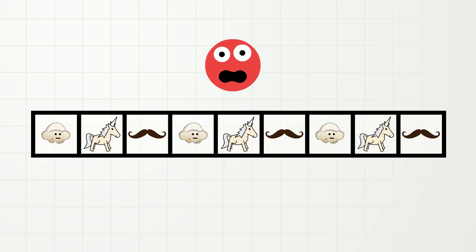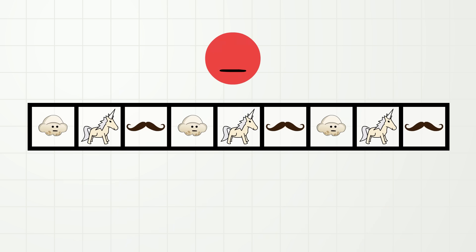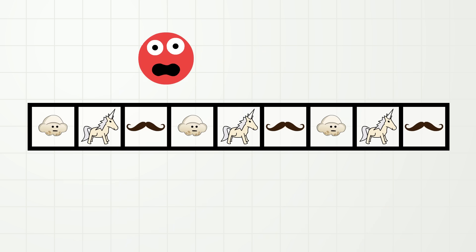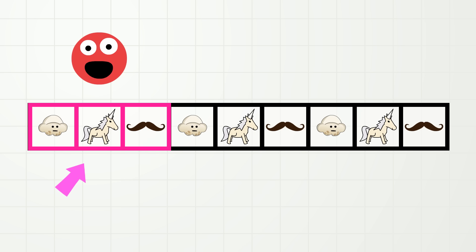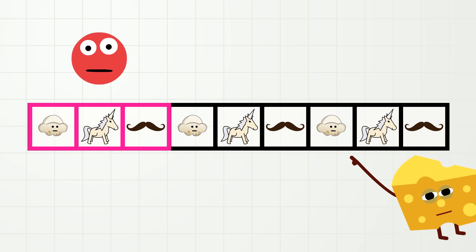We know that this is a pattern with three things: popcorn, unicorn, mustache. And that this is the core of the pattern. The core always repeats. Repeats! Boop!